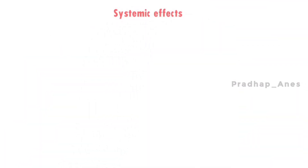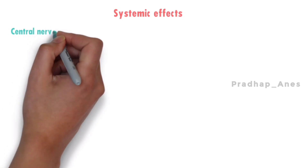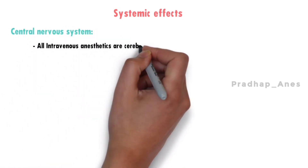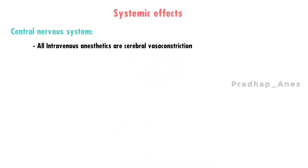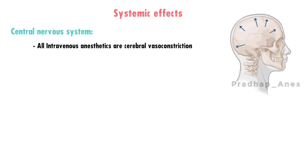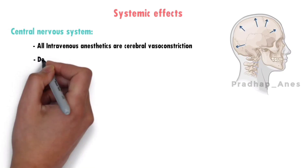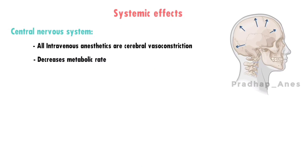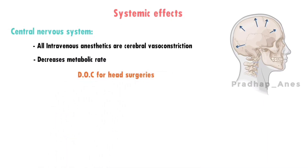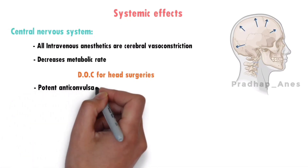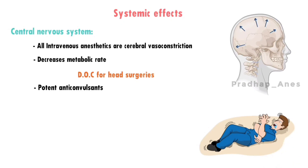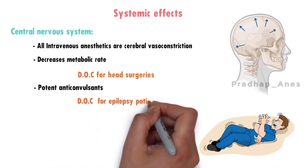Systemic Effects — Central Nervous System: Except for ketamine, all intravenous anesthetics cause cerebral vasoconstriction. Thiopentone causes vasoconstriction of the arteries, reducing blood flow, which results in a decrease in intracranial pressure. It also causes a marked decrease in the metabolic rate. Therefore, thiopentone is the drug of choice for head surgeries. It is also a potent anticonvulsant, making it the drug of choice for epilepsy patients.